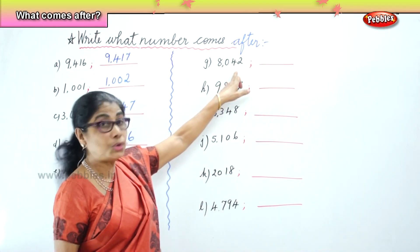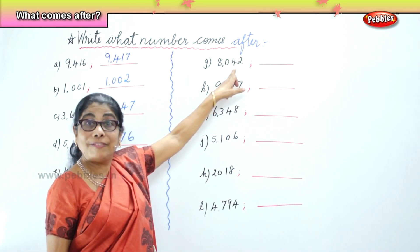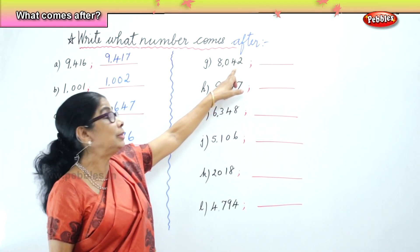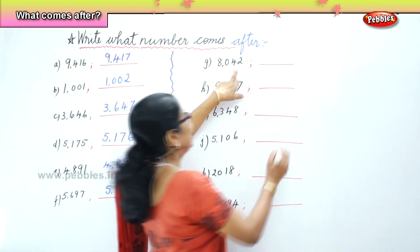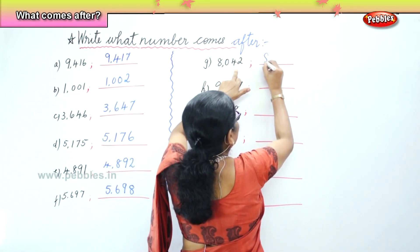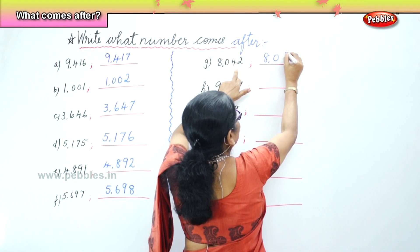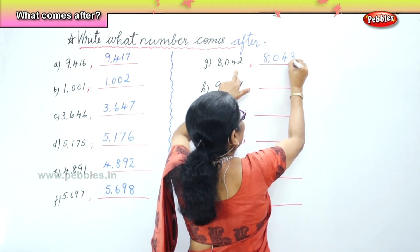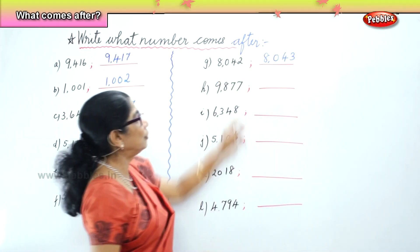8,042. What number comes after 42? 43. So you get 8,043. Very good. So 8,043 comes after 8,042.